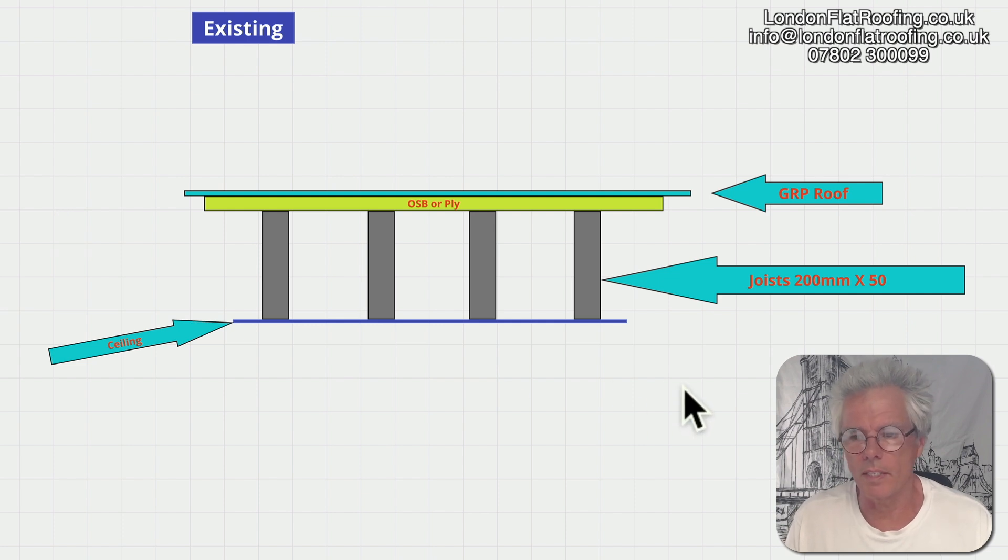This is probably what the existing structure is at the moment. He did say there was some insulation between, but what we've got is a glass fiber roof on top, OSB, and in his case 200 by 50 millimeter joists with a ceiling underneath. There's nowhere for ventilation, so this is not a warm roof. It's a cold roof constructed without any ventilation.